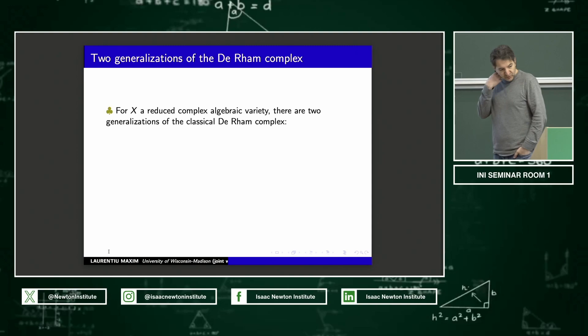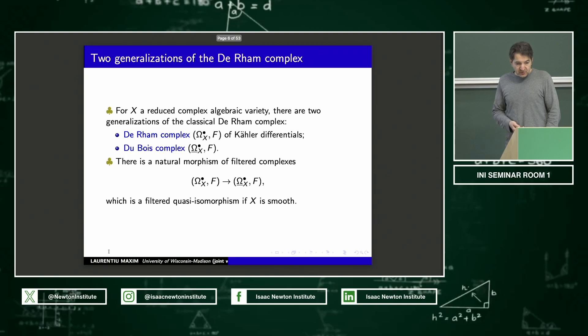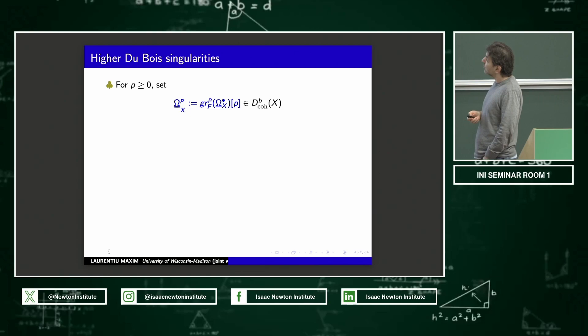Let me start with recalling the two classical generalizations of the Deligne complex. In the singular case, one is given by the Deligne complex of Kähler differentials, denoted by the same symbol, and the other one is the Du Bois complex. And there is a natural morphism between them, which in the smooth case is a quasi-isomorphism.